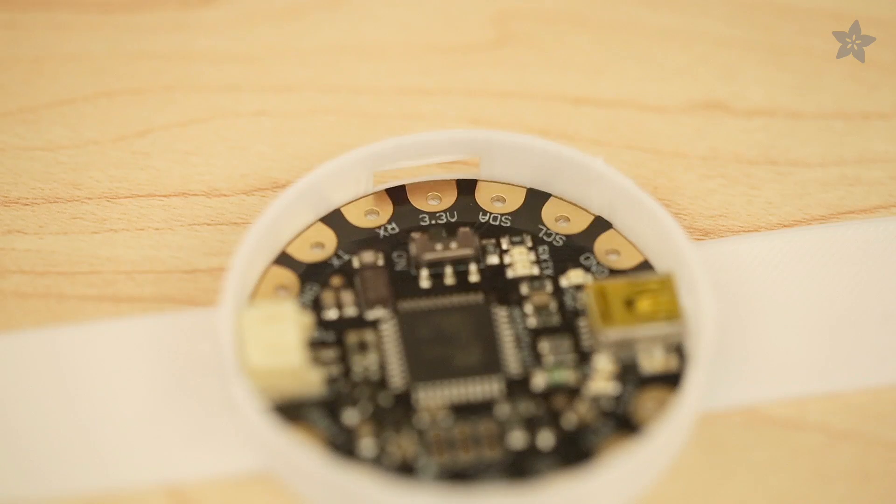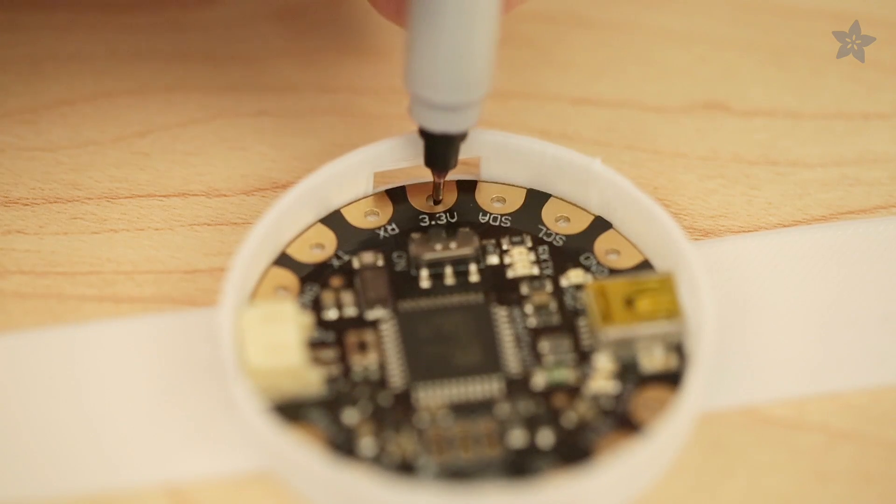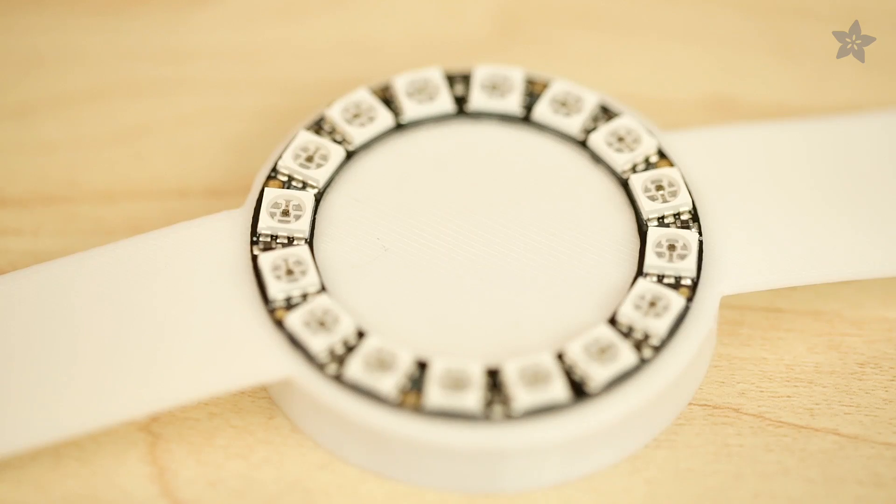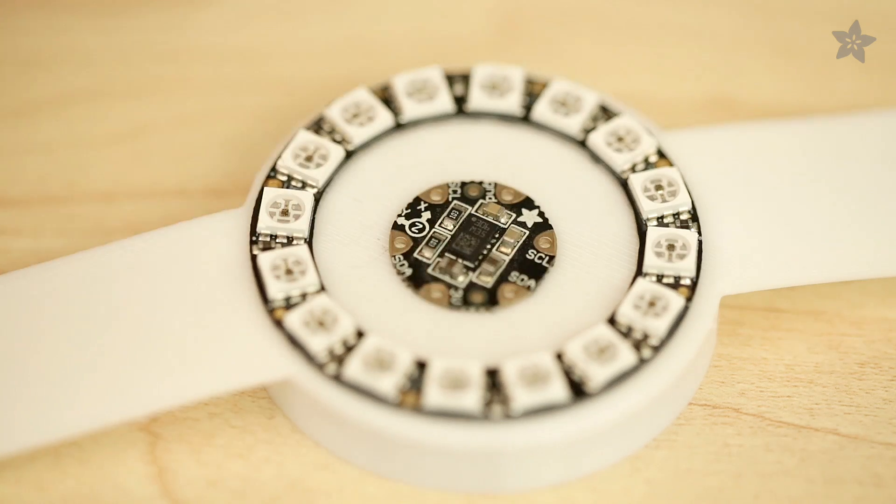Align the flora inside the body and use a fine-tipped marking pencil to mark the pinouts and position the accelerometer in the center of the NeoPixel ring.